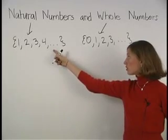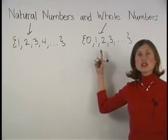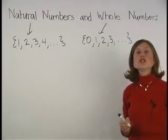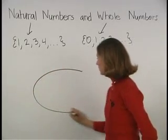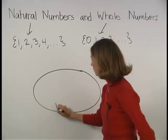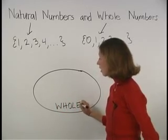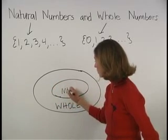Notice that all natural numbers are included within the set of whole numbers. We can represent the relationship between these two sets of numbers using a diagram. This circle represents the set of whole numbers. Then all natural numbers will appear within the set of whole numbers.